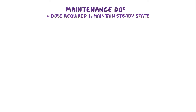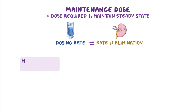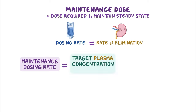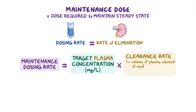The dose required to maintain the steady state is known as the maintenance dose. Since at steady state the dosing rate must equal the rate of elimination, the maintenance dosing rate can be calculated by multiplying the target plasma concentration, measured in milligrams per liter, by the clearance rate, which refers to the volume of plasma cleared of that medication per unit of time, measured in liters per hour.